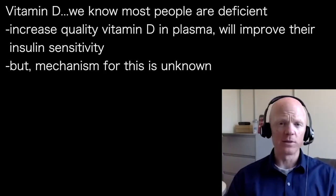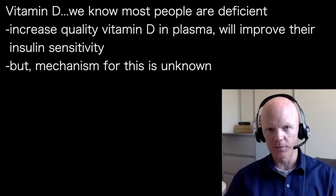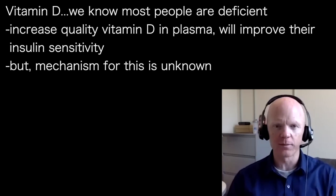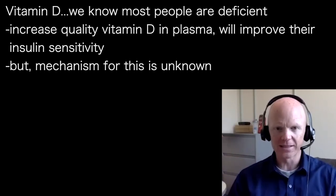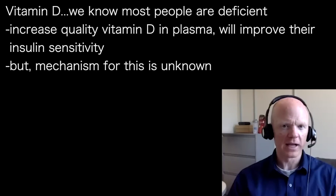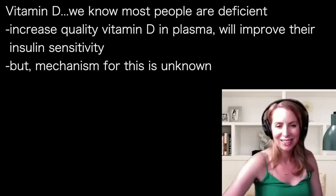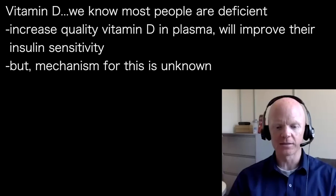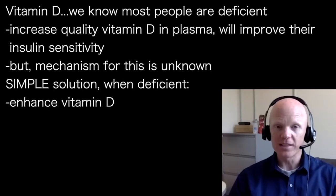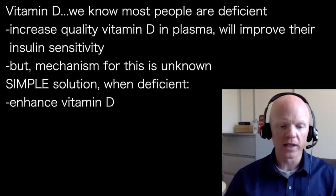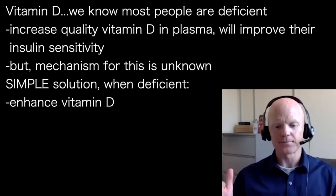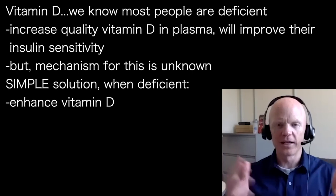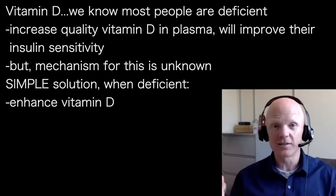We know that people who are vitamin D deficient — if you do nothing but give them a high-quality, usable vitamin D that increases their plasma vitamin D — that alone will improve their insulin sensitivity. So we know there's something there, but the mechanism isn't fully understood. Thankfully, it's a pretty simple solution: if someone has confirmed low vitamin D, you have a clear plan of attack — just enhance their vitamin D.